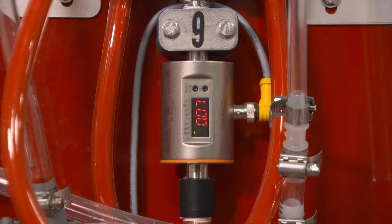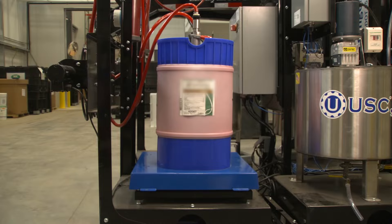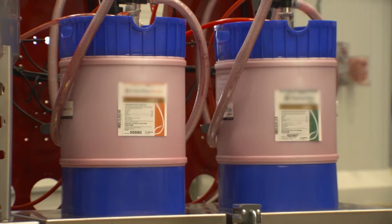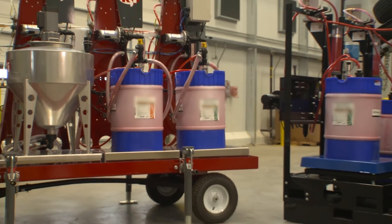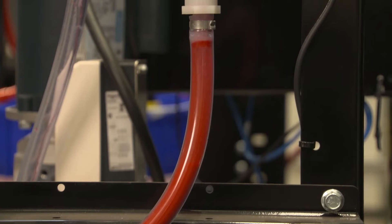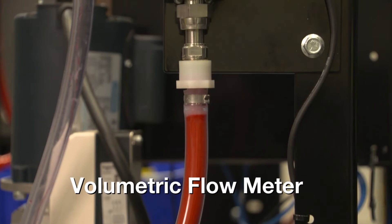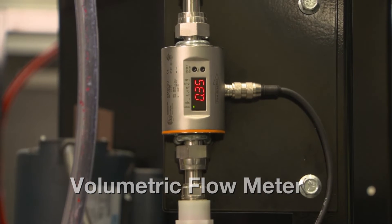The second half of the seed treatment equation relates to chemical metering systems which dose and apply the seed treatment product. The seed treatment pump stand dispenses product from liquid containers and can be equipped with several metering options. The volumetric flow meter measures the volume of product traveling through the pump during a given time.